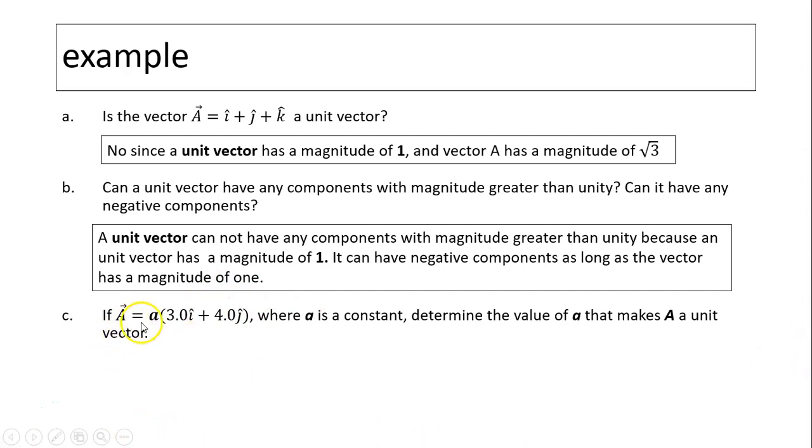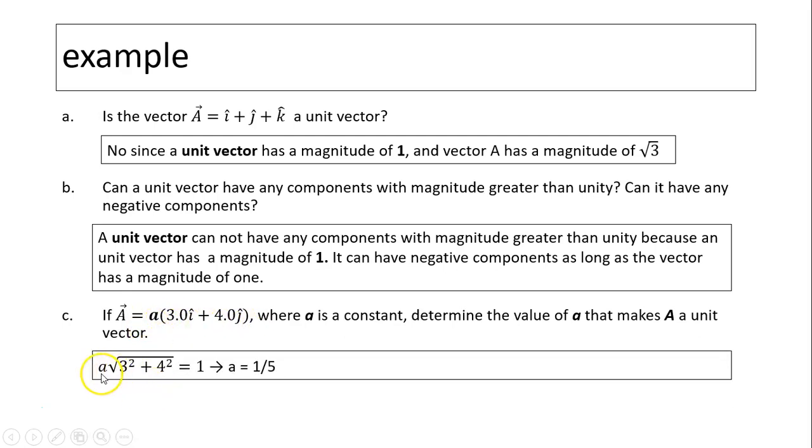Next question. If a equals coefficient a times (3i plus 4j), where a is a constant, what is the value of a that makes this vector a a unit vector? Well, for a unit vector, its magnitude has to equal 1. Now, how do I find the magnitude of this vector? Magnitude is a times square root of 3 squared plus 4 squared. And that has to equal 1. So a equals 1 over 5.